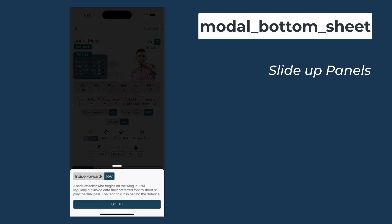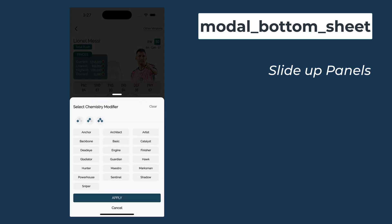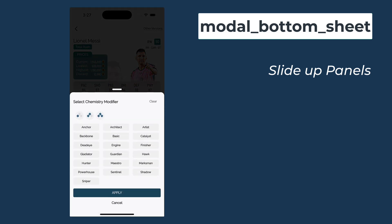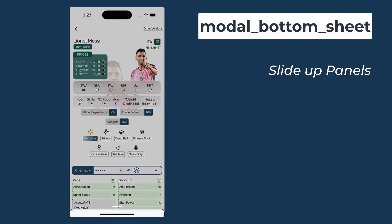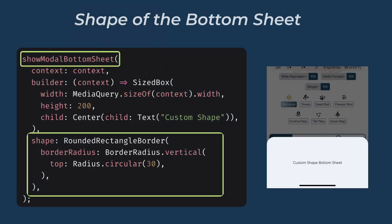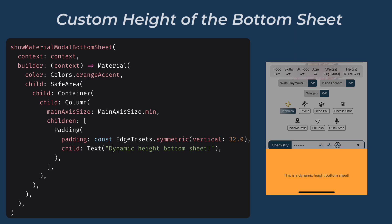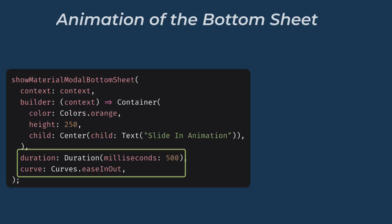It is also highly customizable and flexible. You can create full-screen modal bottom sheets, specify custom corner radii, set different transition durations, or change the background color to match your app's design. You can define a custom shape for the bottom sheet like adding a rounded top with a radius of 30. You can control the height of the bottom sheet, allowing you to show more or less content depending on your needs. You can also customize the animation of the bottom sheet — how it comes into visibility and how it goes off.